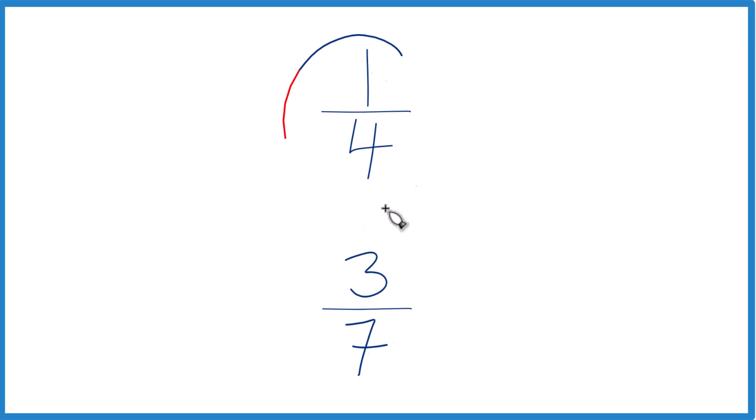Let's compare the two fractions one-fourth and three-sevenths. So one way to do it would be just to divide one by four in a calculator, get a decimal, divide three by seven, get a decimal, just compare the decimals. That would tell you which fraction's larger, one-fourth or three-sevenths.